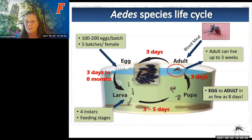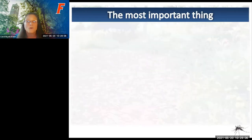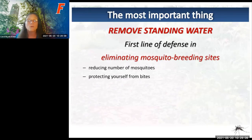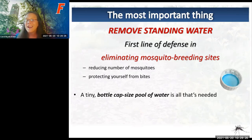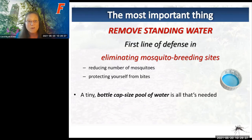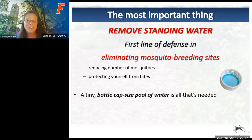The most critical step to lowering mosquito numbers and protecting yourself from bites is removing standing water—it's your first line of defense. Even a bottle cap—just five milliliters of water—is all a mosquito needs to lay its eggs and create new mosquitoes. So when checking your yard, look even in the smallest areas.